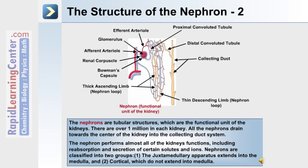The nephron performs almost all of the kidneys' functions, including the reabsorption and secretion of certain solutes and ions. Nephrons can be classified into two groups: juxtamedullary nephrons, which extend into the medulla region of the kidney, and cortical nephrons, which do not extend into the medulla.